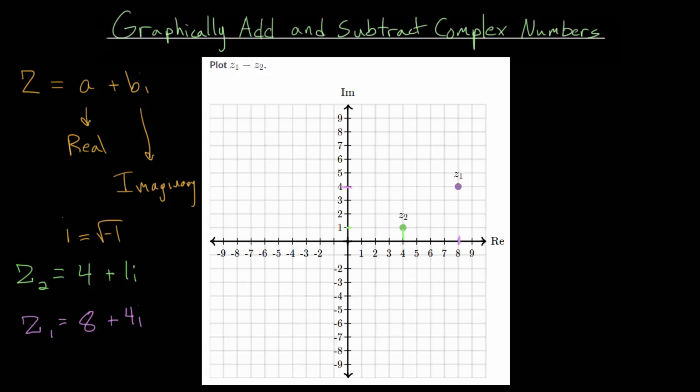And from here, when we compute z1 minus z2, we would subtract 4 from 8 and subtract 1i from 4i, since when doing addition or subtraction with complex numbers, you combine the real parts and you combine the imaginary parts. So that's one approach that we'll take.